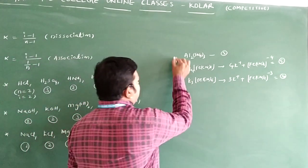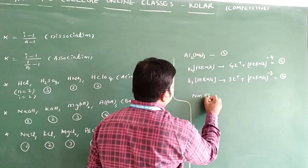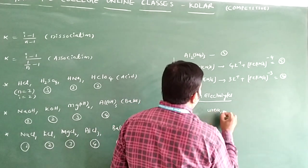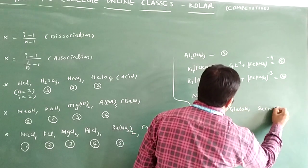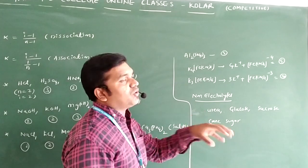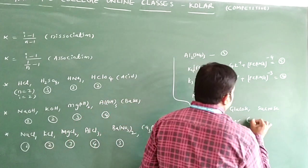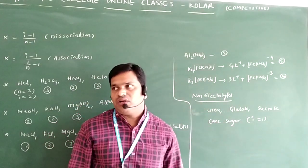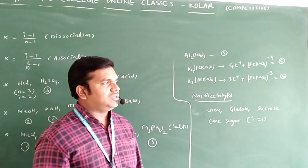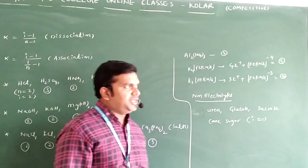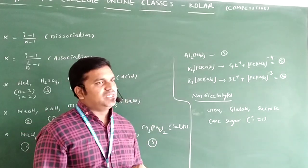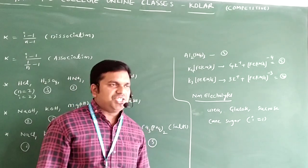Now let's look at non-electrolytes. Examples include urea, glucose, and sucrose. When you observe these compounds in a problem, you can directly write i = 1, because there is no association or dissociation for these compounds. So for non-electrolytes the van't Hoff factor i is directly equal to 1. This concept is very useful for identifying changes in colligative properties.